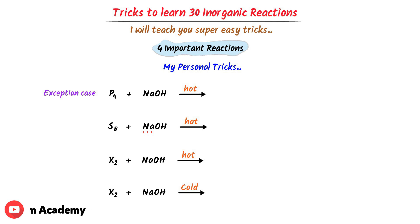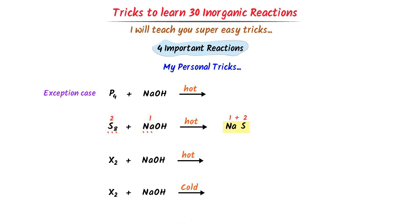I say sodium is the first element and sulfur is the second element. Now listen carefully: the first product of the reaction is first plus second elements. The first element is sodium and the second element is sulfur. The oxidation state of sodium is plus one and that of sulfur is minus two. According to the criss-cross method, I write two — thus I get sodium sulfide (Na₂S).